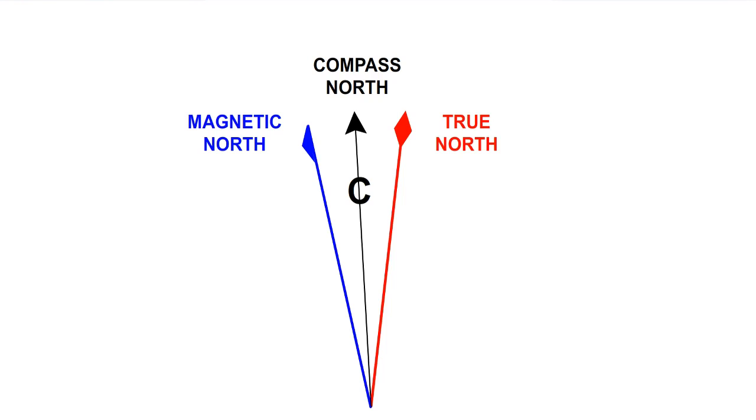However, compass north is not a geographic location. It is merely magnetic north that is affected by local magnetic influences within the aircraft.